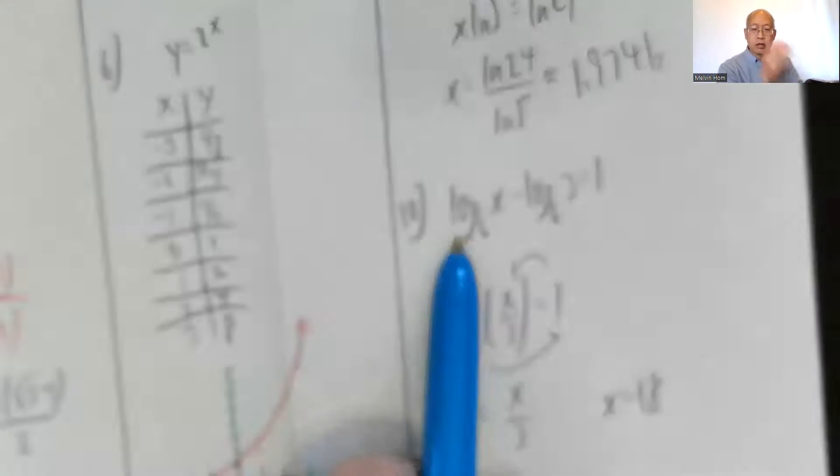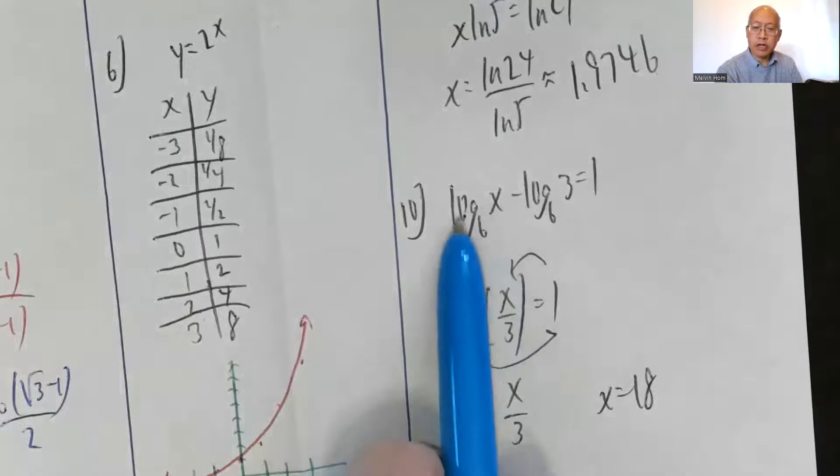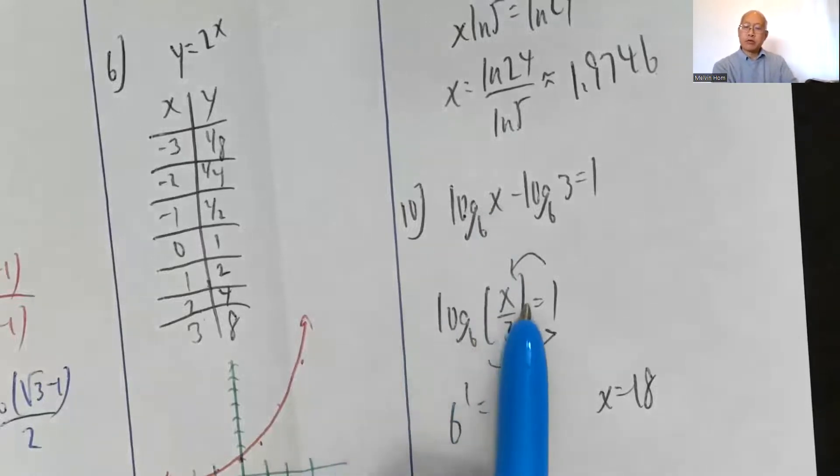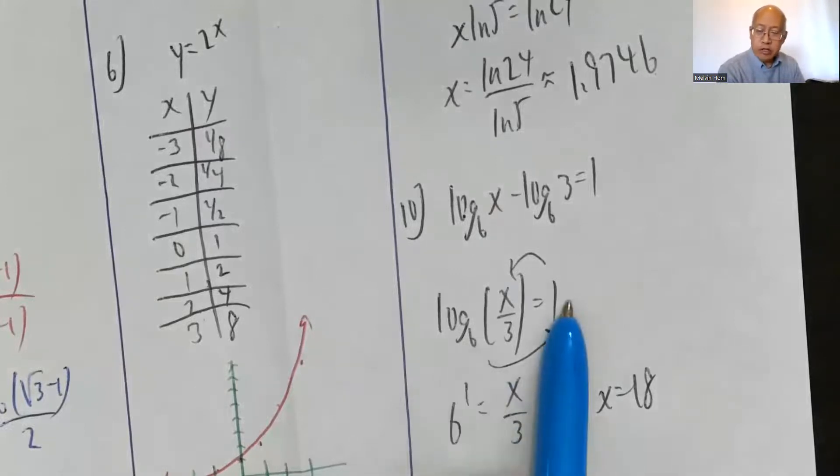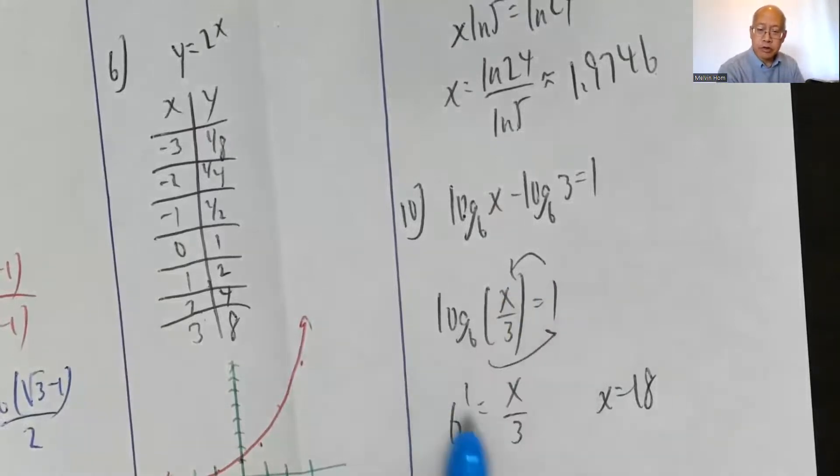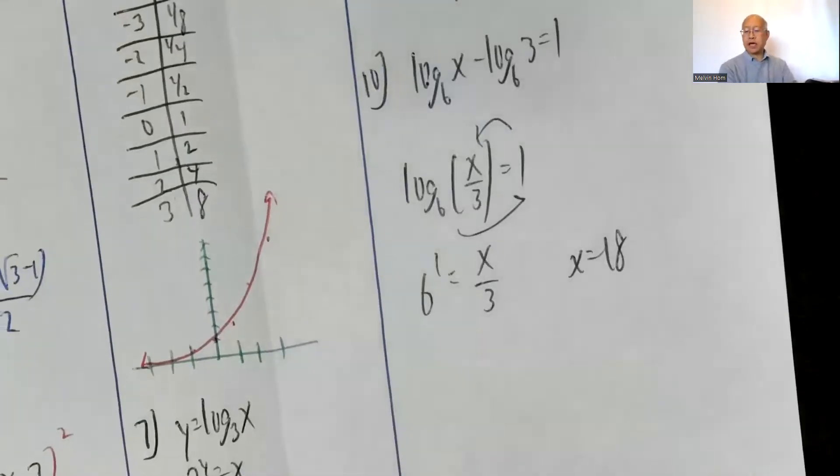Number 10: The log base 6 of x minus log base 6 of 3 is a log base 6 of the quotient x over 3. That equals 1. Unscramble it. Write it without the log. The base is 6, exponent is 1. Come back in for the result. So 6 to the 1 power equals x over 3. Multiply both sides by 3. So x is equal to 18.